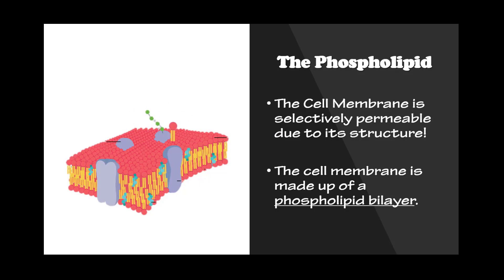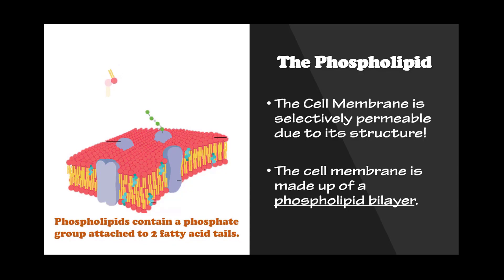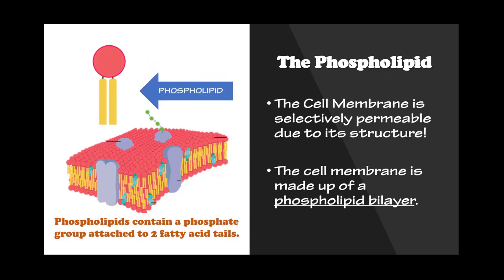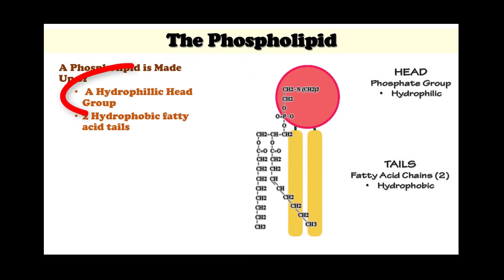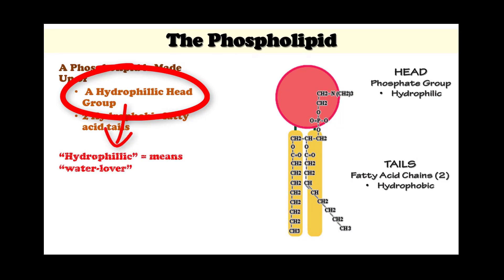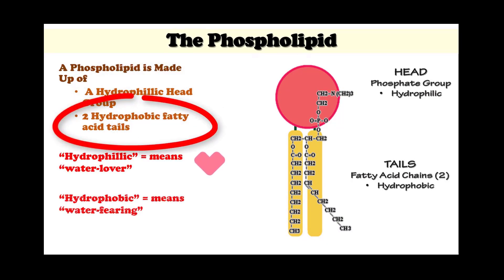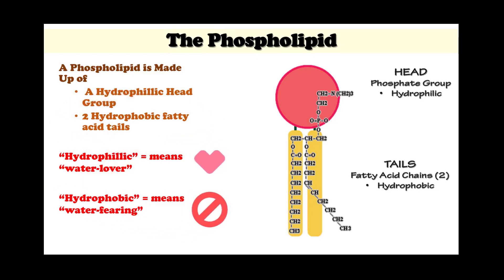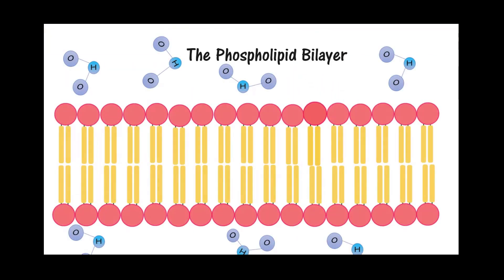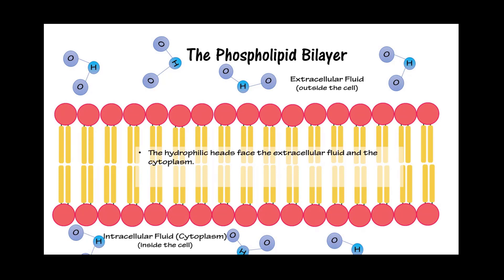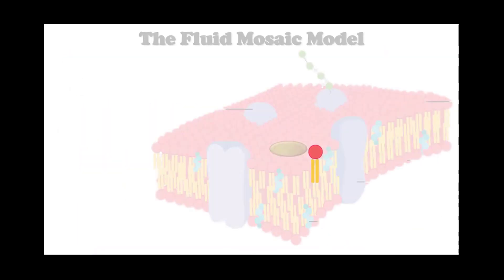The cell membrane is selectively permeable due to its structure. The cell membrane is made up of a phospholipid bilayer. Phospholipids contain a phosphate group attached to two fatty acid tails. A phospholipid is made up of a hydrophilic head group — hydrophilic means water lover — and two hydrophobic fatty acid tails — hydrophobic means water fearing. The hydrophilic heads face the extracellular and intracellular fluid, while the hydrophobic fatty acid tails face inward toward each other, away from the liquid, thus creating a barrier.